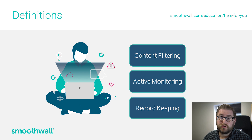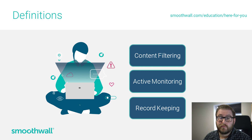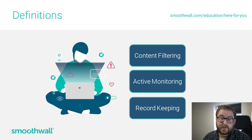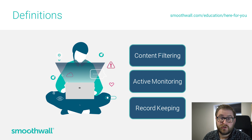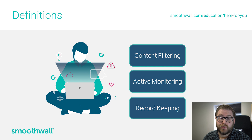Also, if you use Smoothwall's monitoring system, it integrates with the record management system so that risk detected online from the monitoring can show up automatically in the child's record to help build that picture. Paper-based records are not sufficient in normal times, but in lockdown they are hugely inadequate and could be jeopardising your students' welfare.